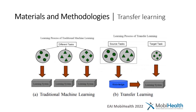Transfer learning is a machine learning method where a model developed for a task is reused as the starting point for a model on a second task. This is a popular approach in deep learning where pre-trained models are used as the starting point on computer vision and natural language processing tasks, given the vast computing and time resources required to develop neural network models. The basic steps used in this study: we created a source model by training on public datasets with high-resolution fundus photographs, then used this pre-trained model as the starting point to train our model with low-resolution images from the private dataset.